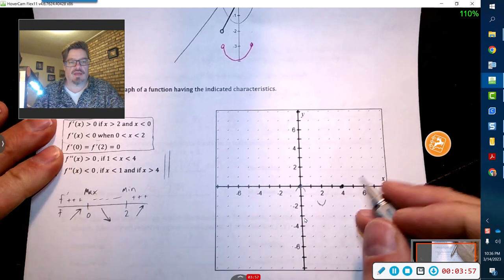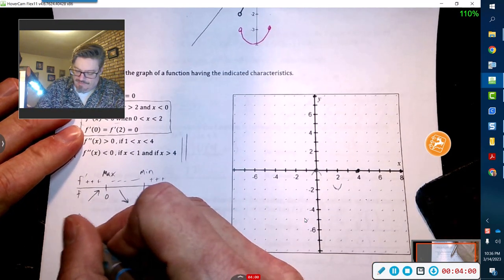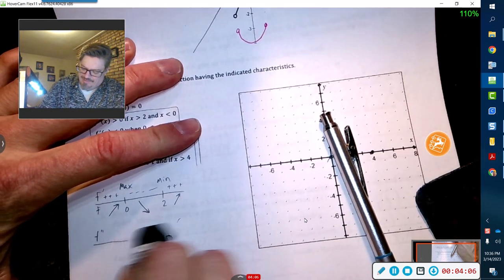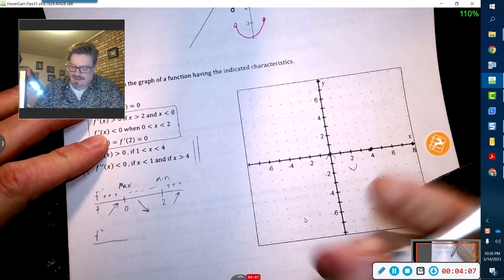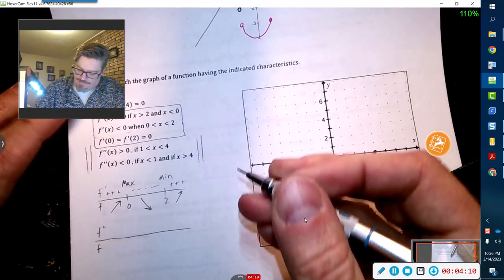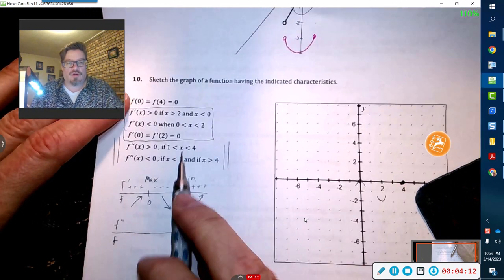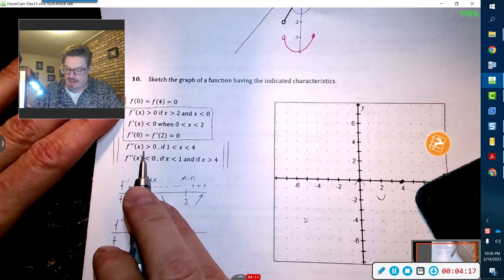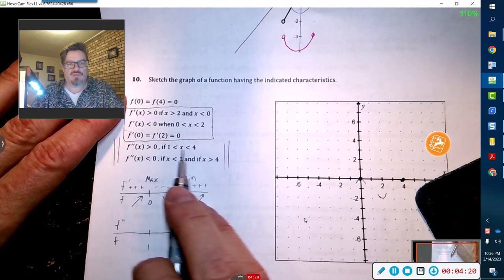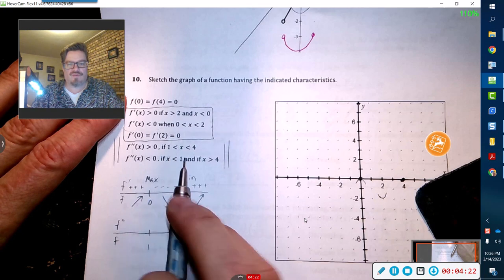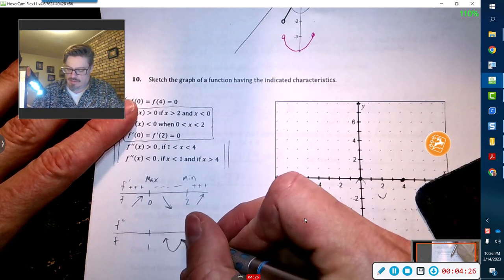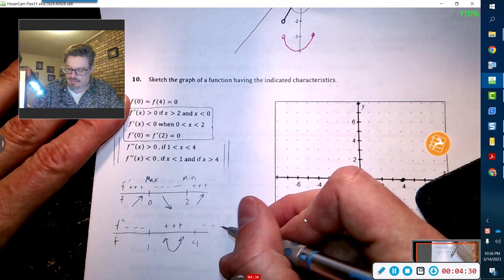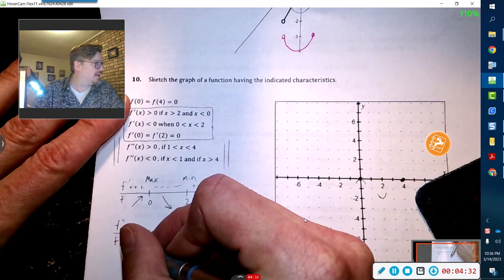What I want to do now is think of this second derivative. So now it's 1 and 4 where it transfers. So it looks like 1 and 4, it's gonna be concave up in between 1 and 4, and then it'll be concave down the other locations.